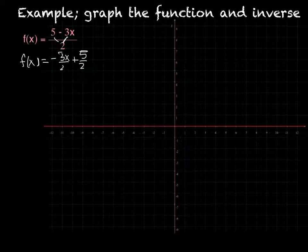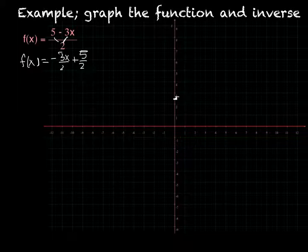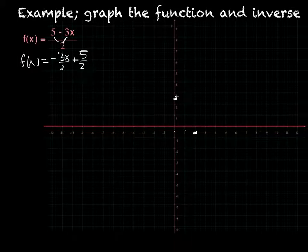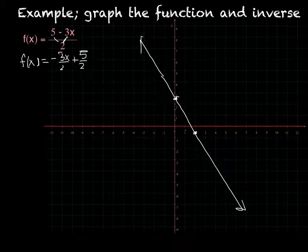Now I can see it's a line with a y-intercept of 5 over 2 and a slope of negative 3 over 2. So if I were to graph that, 5 over 2 is 2 and a half, so I'm going to cross about right there. And then I'm going to go down 3 over 2, about right there, and then I graph that line. There's my original function.